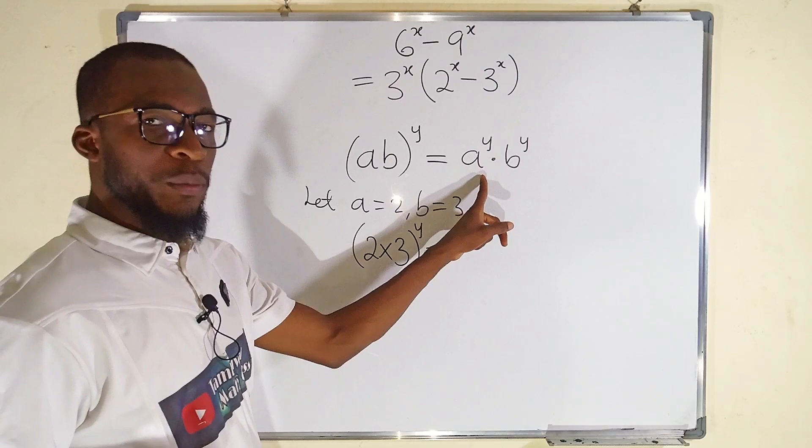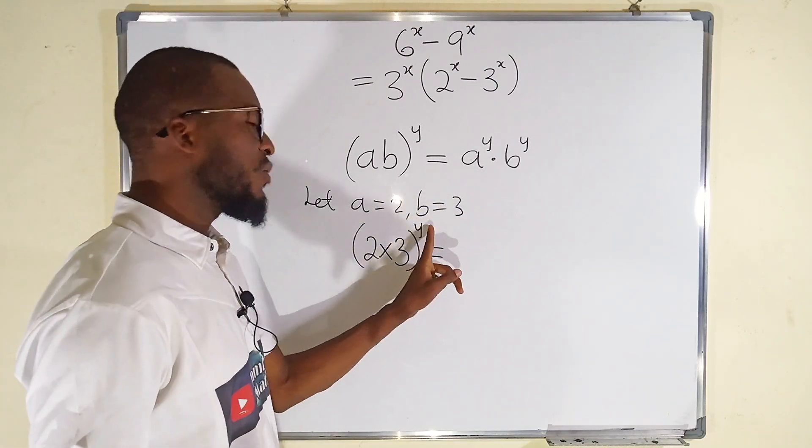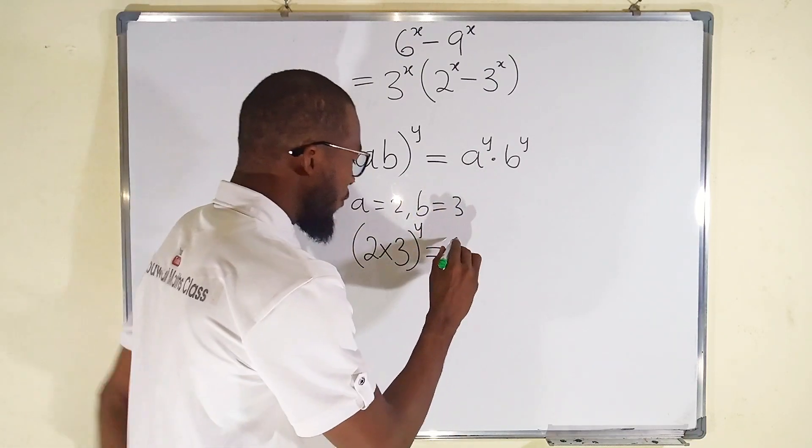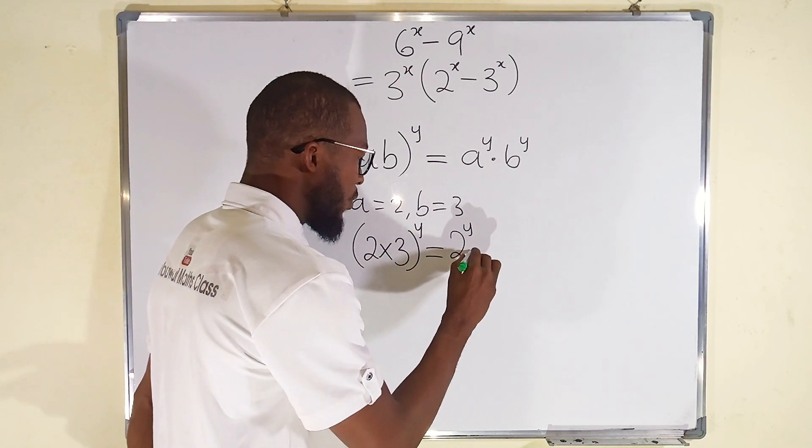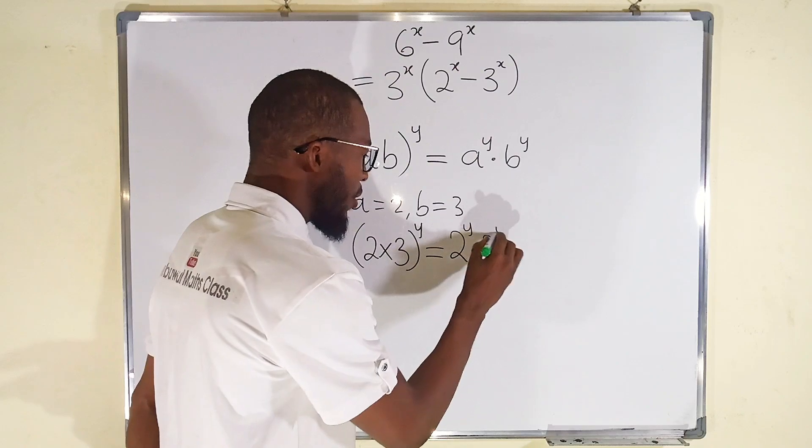Since we can distribute the power, we can say 2 raised to the power of y multiplied by 3 raised to the power of y. That is, 2^y multiplied by 3^y.